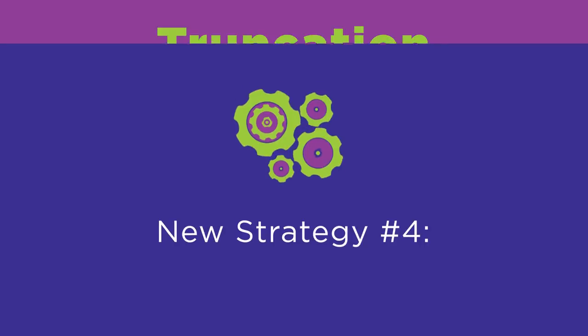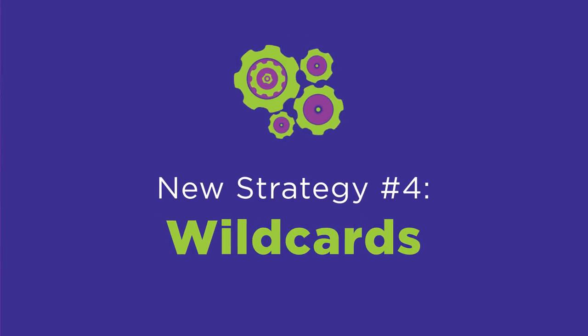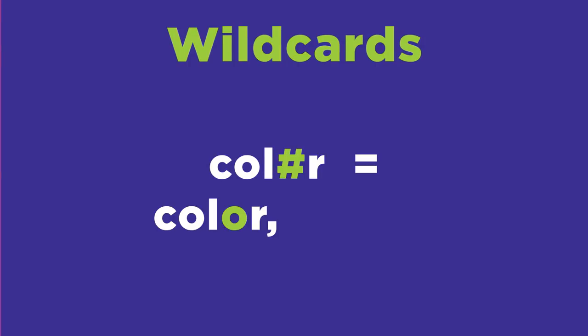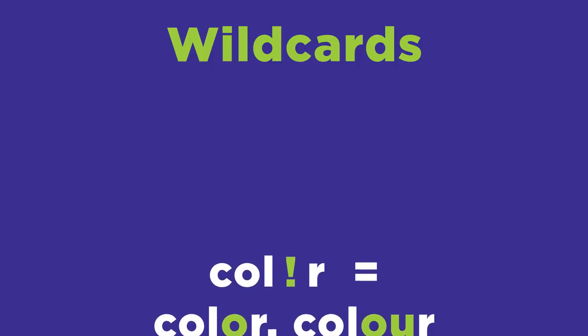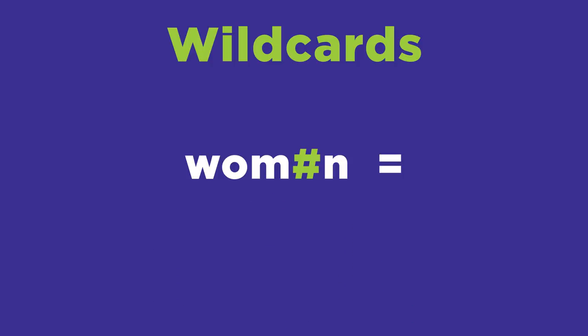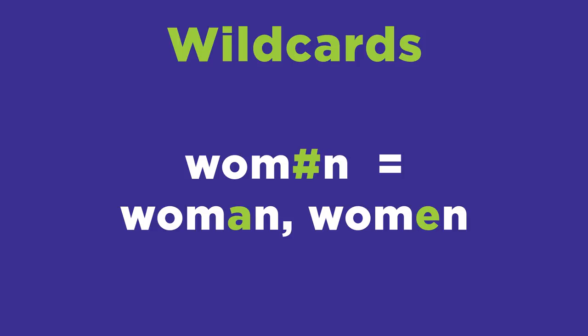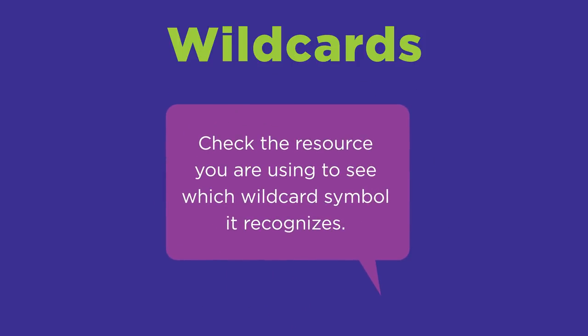Finally, a similar strategy is the wildcard search, which uses a symbol within a word to provide for all possible variations within that word. The most commonly used symbols are the hashtag or number sign, question mark, and exclamation point. A wildcard search for wom#n with the e replaced by a hashtag will retrieve results that use either the term woman or women. Check the resource you are using to see which wildcard symbol it recognizes.